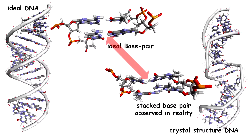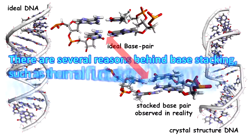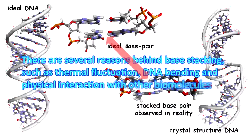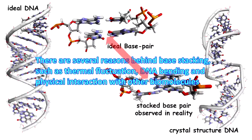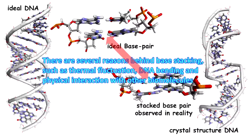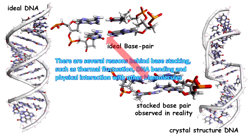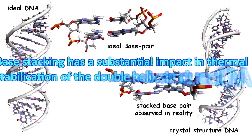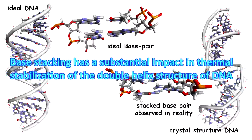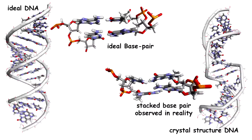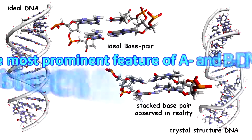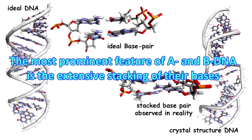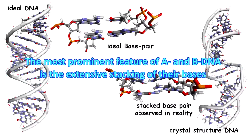Why this deviation? There are several reasons behind this, such as thermal fluctuation, DNA bending, and interaction with other biomolecules. Base stacking has a substantial impact on thermal stabilization of the double helix structure of DNA. The most prominent feature of all forms of DNA is the extensive stacking of its bases.